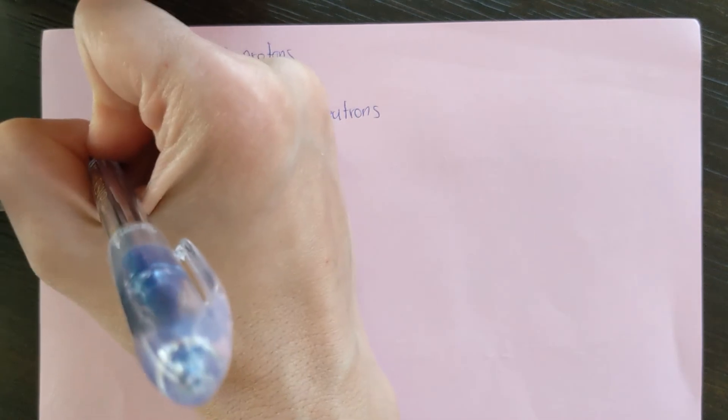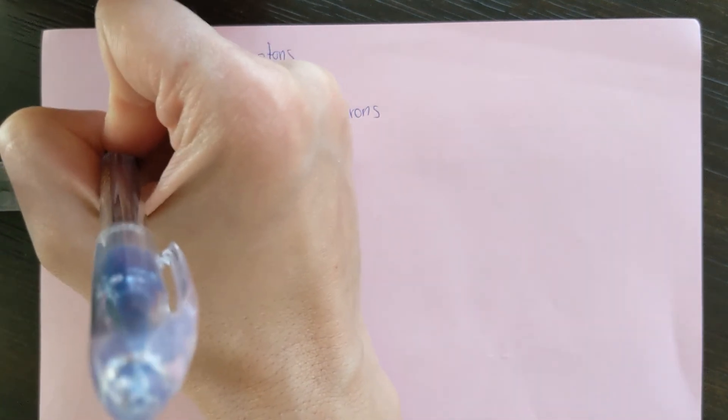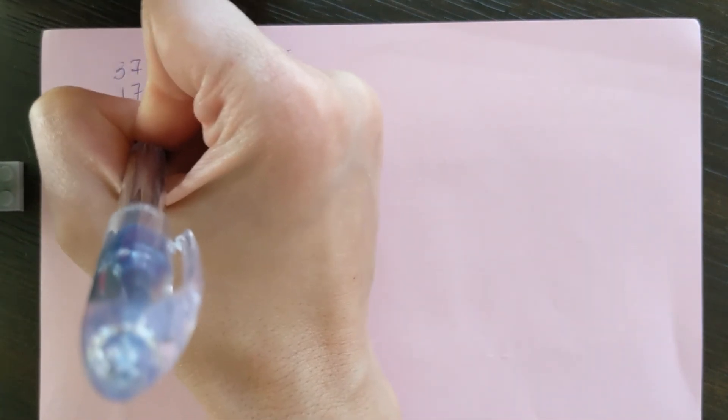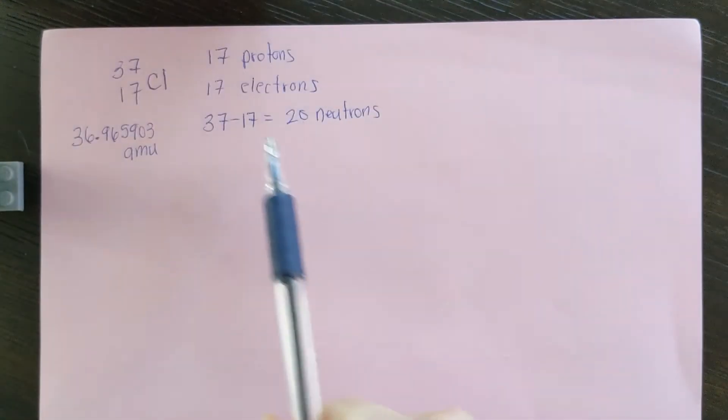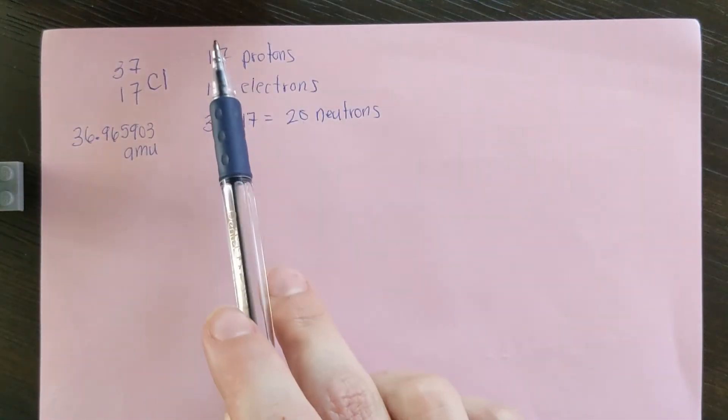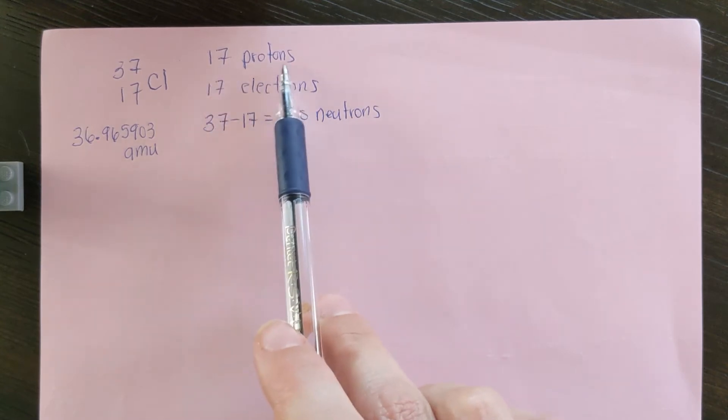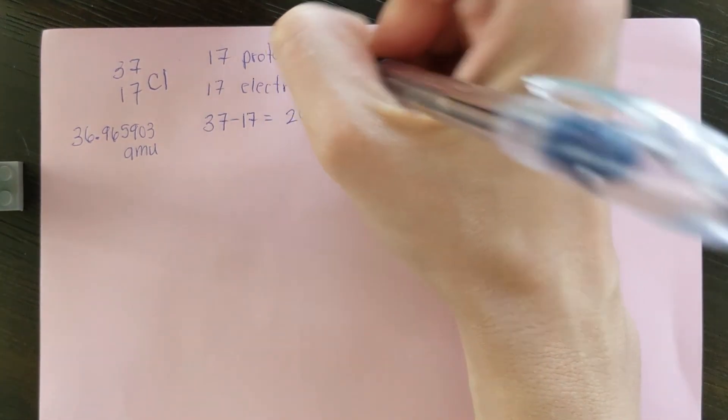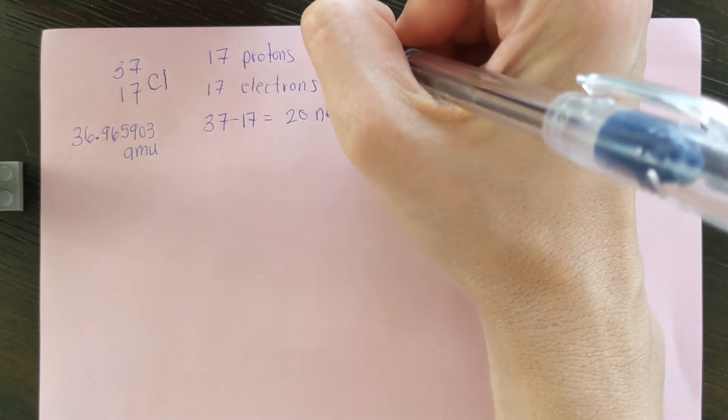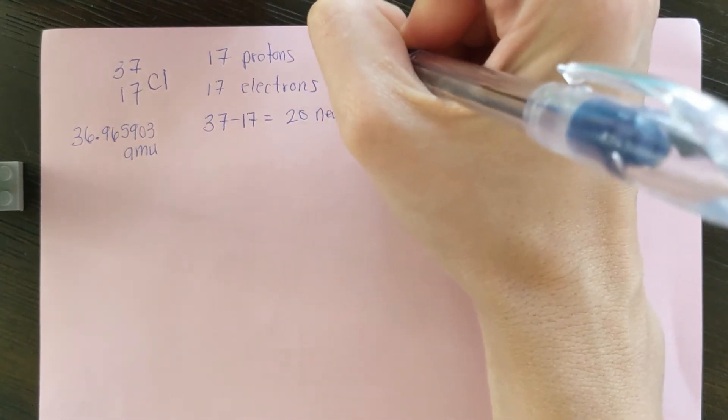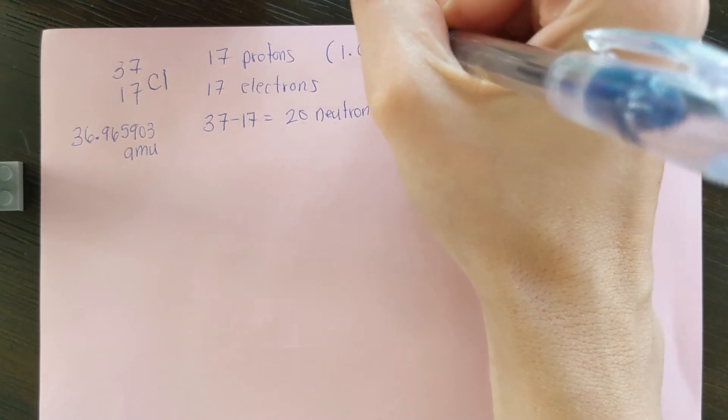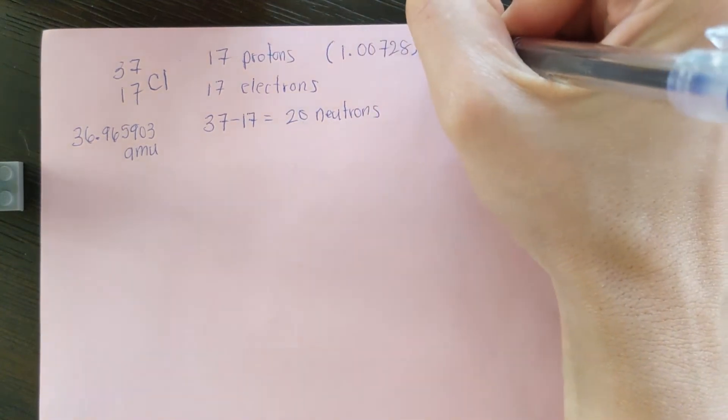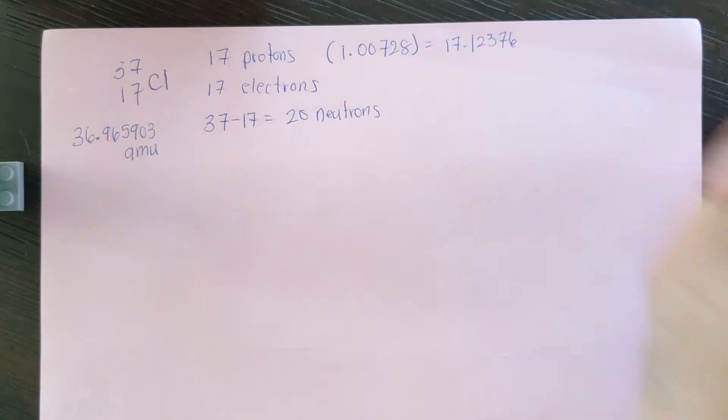In the problem, it gave us the mass of this atom is 36.965903 atomic mass units. So let's calculate the mass associated with 17 protons. We're going to take this and multiply it by the mass of a proton, 1.00728, which gives us 17.12376.